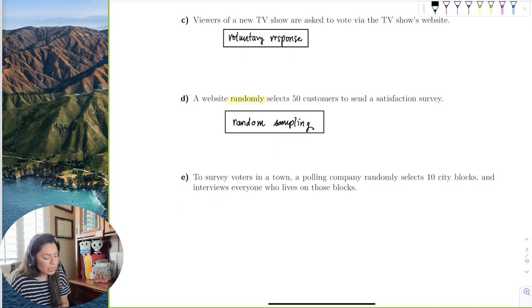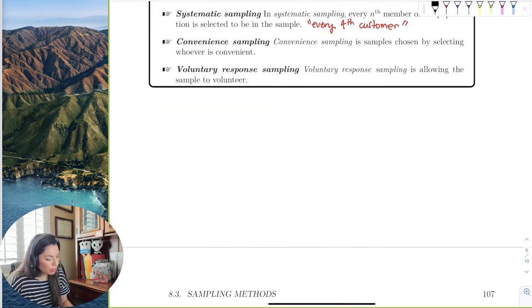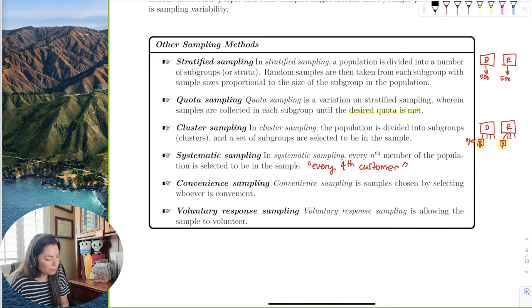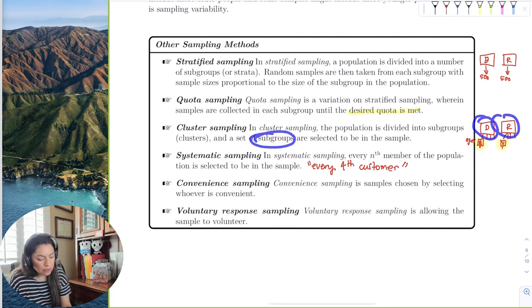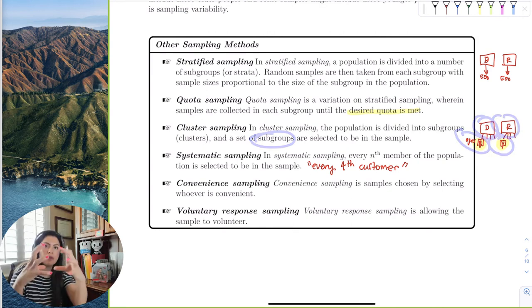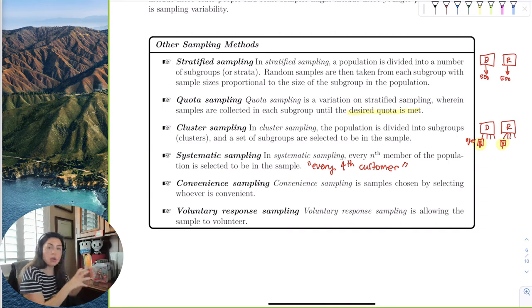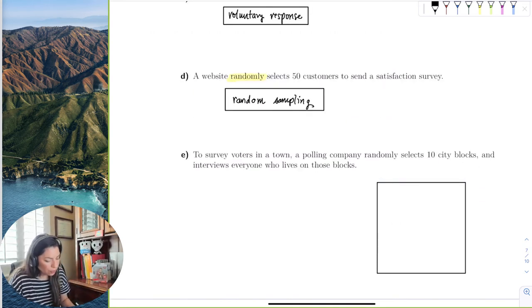Okay, last one. To survey voters in a town, a polling company selects 10 city blocks and interviews everyone who lives on those blocks. So if we looked up here in our little table, we would see that stratified is when you split into subgroups and take random people or subjects from those groups. Quota is stratified but not equal. And cluster is when you take the entire group. So again, if you take the entire group, right, you don't pick from the group, you take the entire cluster, right? So here's the town and the polling company randomly selects 10 city blocks.